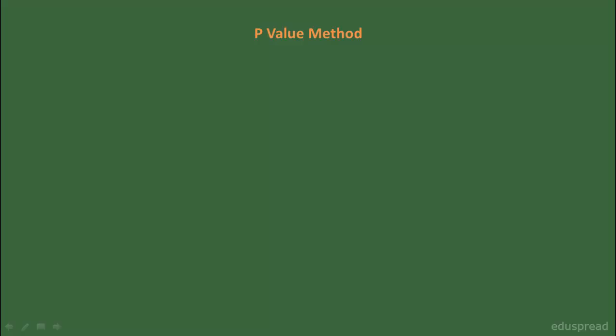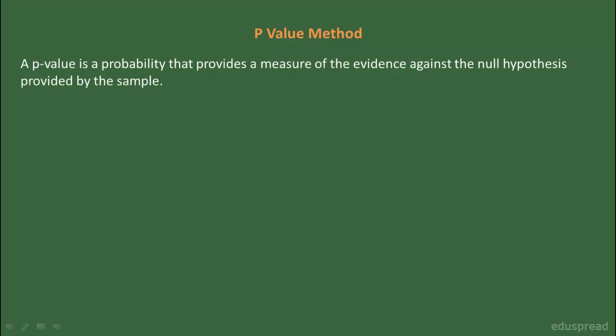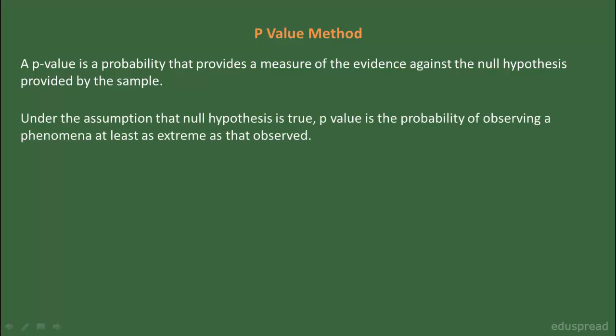Let's start with a couple of definitions. By definition, a P-value is a probability that provides a measure of the evidence against the null hypothesis provided by the sample. Let me define P-value in a more simple and detailed manner. Under the assumption that the null hypothesis is true, P-value is the probability of observing a phenomena at least as extreme as that observed.